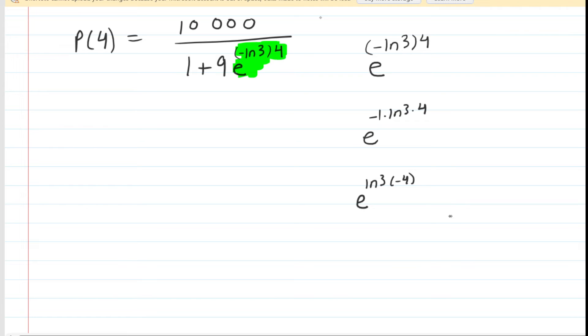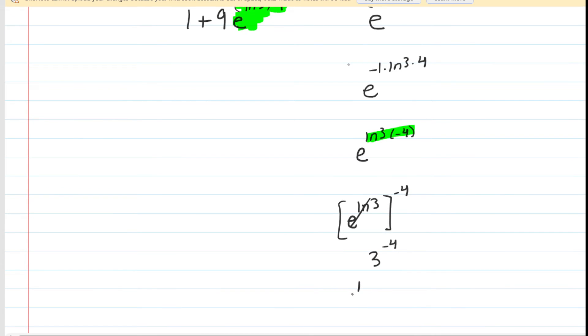But interestingly, we can rewrite that even further to simplify. We can write that as e to the ln of 3, all of which is raised to the negative 4. And that does work because recall when you have a power raised to a power, you multiply those powers. So if we multiply negative 4 by the ln of 3, that would give us this exact same outcome. So why did we do that? Well, it's because the e to the ln of 3 simplifies. The e and the ln cancel, so you're left with just 3 to the power of negative 4. And of course, that simplifies further because that's just 1 over 3 to the positive 4. And 3 to the positive 4 is going to be 81. So you have 1 over 81.